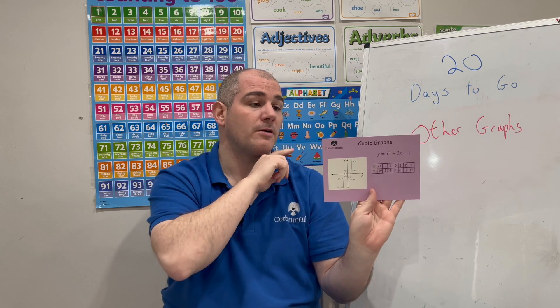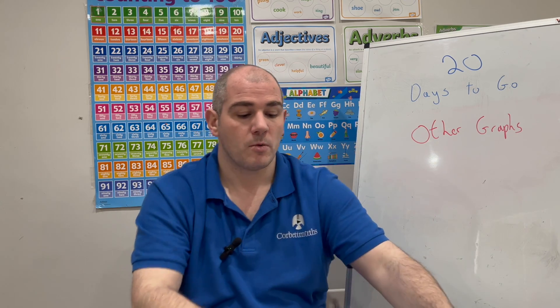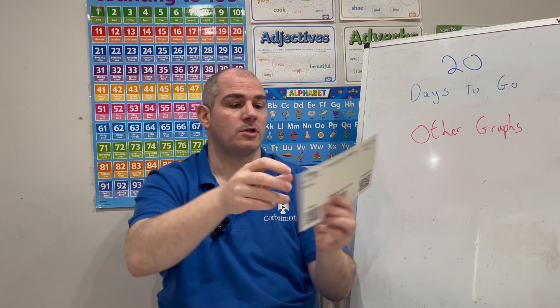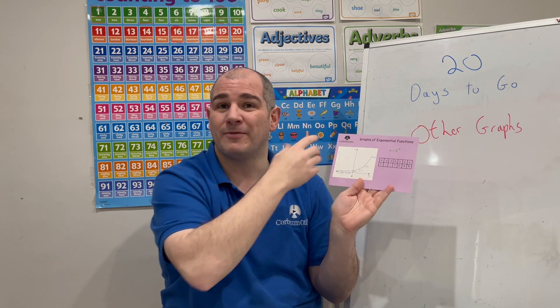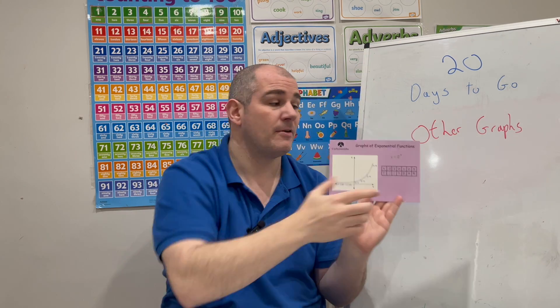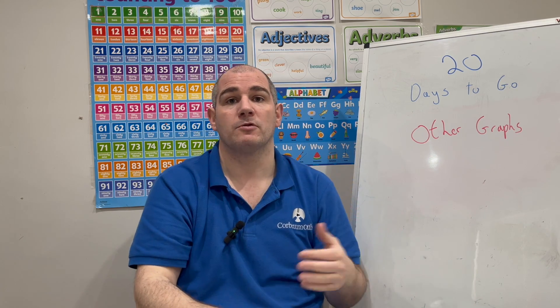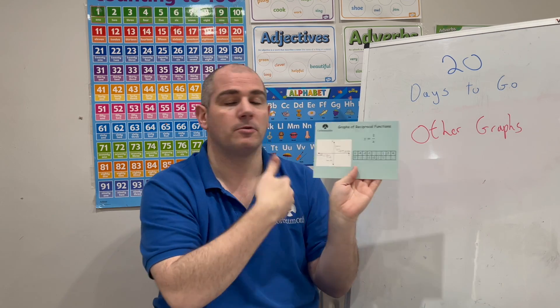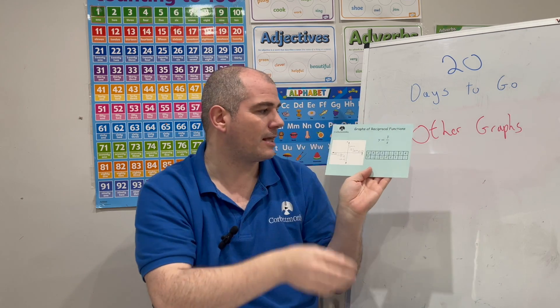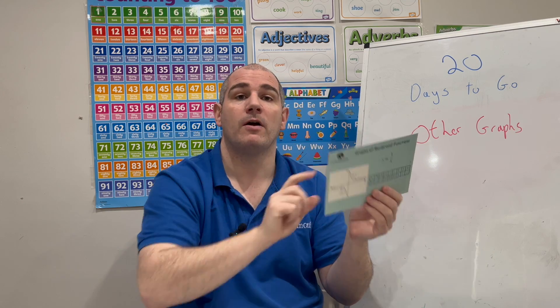If you've got the Core Maths revision cards, card number 36 will be useful for you. We're going to look at exponential functions, such as y equals 2 to the power of x - that's revision card 34. And we're going to look at reciprocal graphs, where it's 1 over x or 2 over x - that's revision card 35.